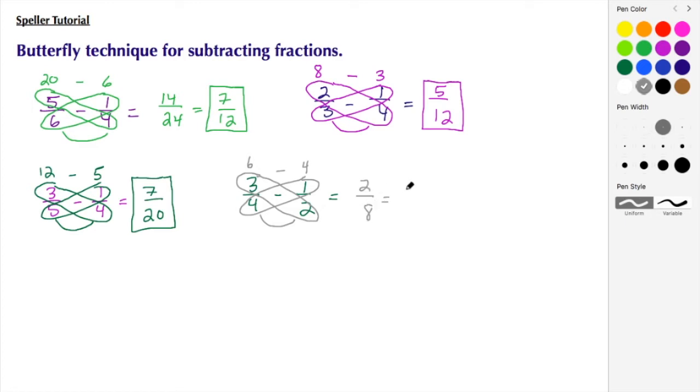So here I have 2/8, which can be simplified. Both of these are even numbers again. I can divide by 2: 2 divided by 2 is 1, and 8 divided by 2 is 4. So here I see the difference is 1/4.